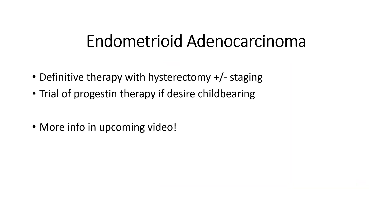Endometrioid adenocarcinoma typically requires definitive therapy with hysterectomy with or without staging. In some rare cases, if a patient is young and still desires childbearing, a trial of progestin therapy can be used, and in rare cases you can have regression of FIGO grade 1 carcinomas with progestin therapy — although this is typically not the preferred method, especially in patients who have completed their childbearing. There is a lot more to say about endometrioid adenocarcinomas and other carcinomas arising in the endometrium, but we'll save that for a future video.